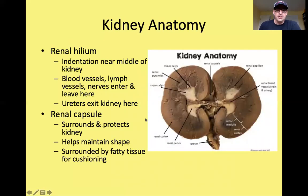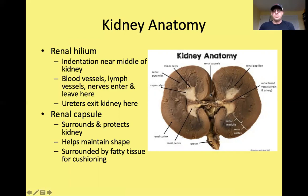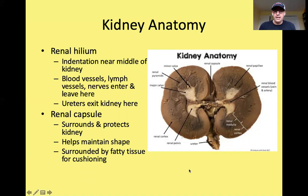The renal capsule surrounds and protects the kidney. It helps maintain the kidney's shape and is surrounded by a fatty tissue for cushioning, which you would have seen in the rabbit or perhaps in the pig during dissection.